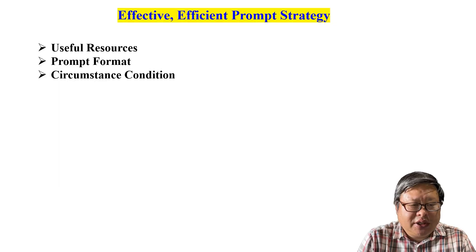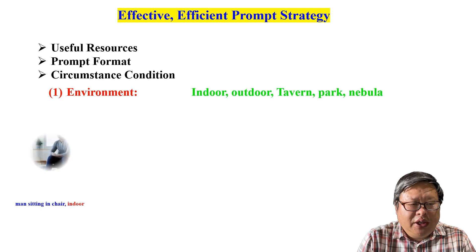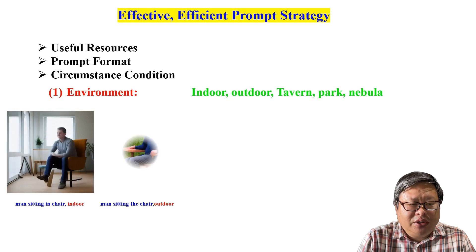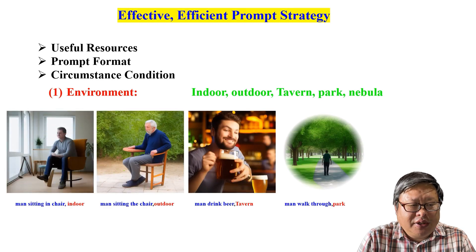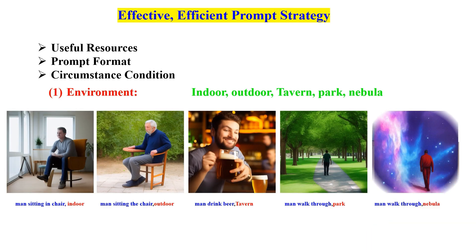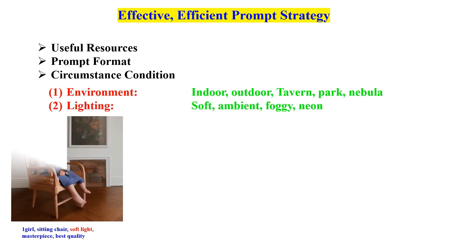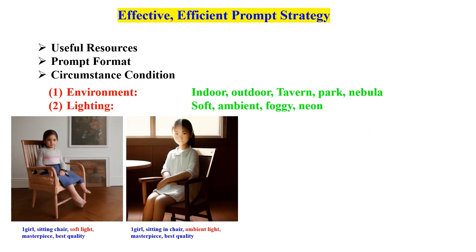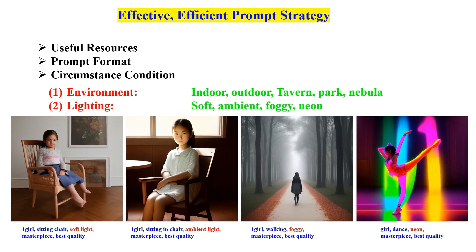Let's discuss the conditions that influence prompt generation. This includes the environment — indoor, outdoor, tavern, park, etc. And lighting — soft, ambient, foggy, neon, etc.